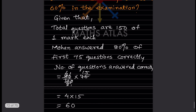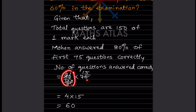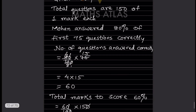So the first thing: 80% means we divide 80 by 100, and multiply by 75 questions. Simplifying: 80/100 × 75. The 100 and 75 partially cancel — 4 × 15 — giving us 60. So the number of questions Mohan answered correctly is 60.